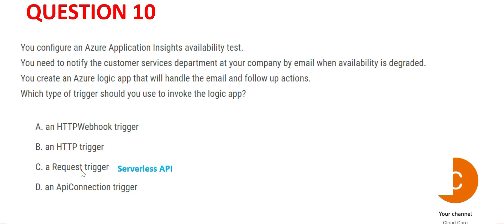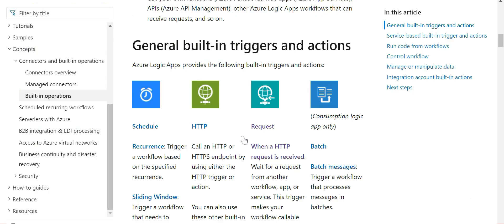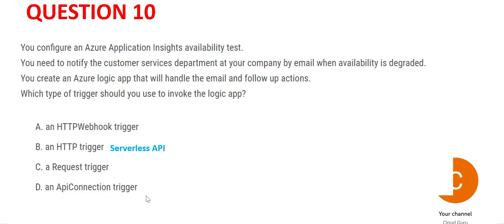Option C is a Request trigger. For option B, if you are working with an HTTP trigger, it has to be a use case related to a serverless API — you can invoke functions using HTTP trigger in a serverless API use case. Regarding option A, the API connection trigger — I could not find documentation linking it to this scenario.